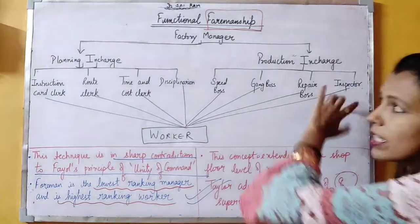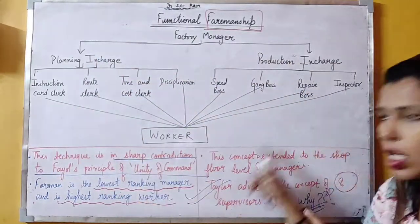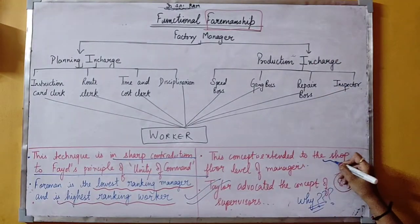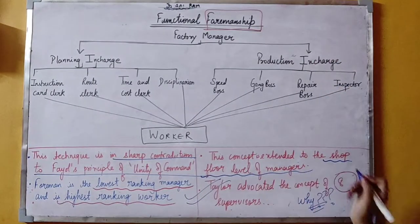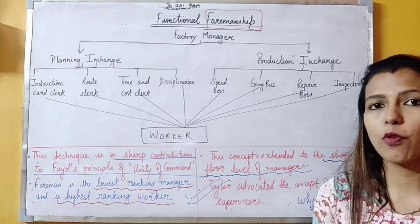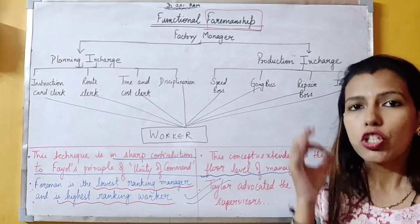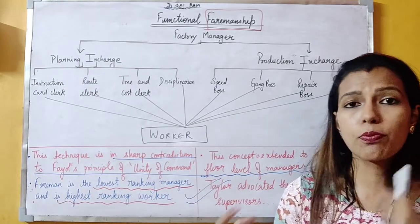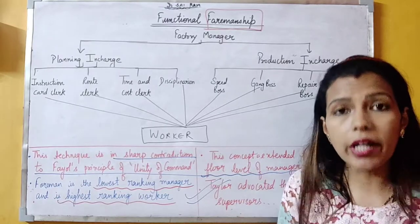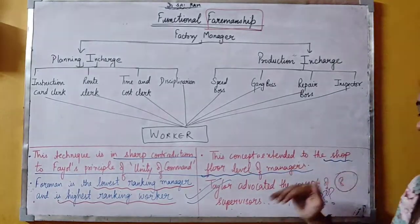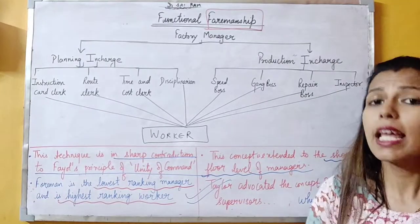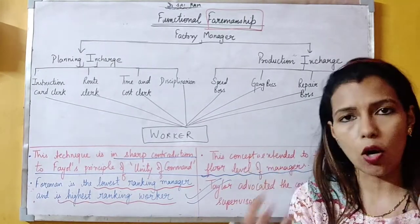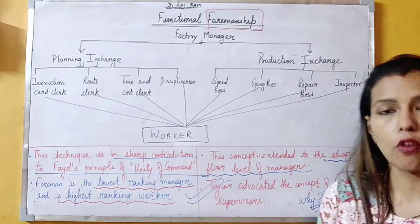This concept is applicable at the shop floor level of management. Shop floor level means factory level — the lowest level of management where there is actual production and workers are involved. Taylor's principles and techniques revolve around workers, around shop floor level of management.